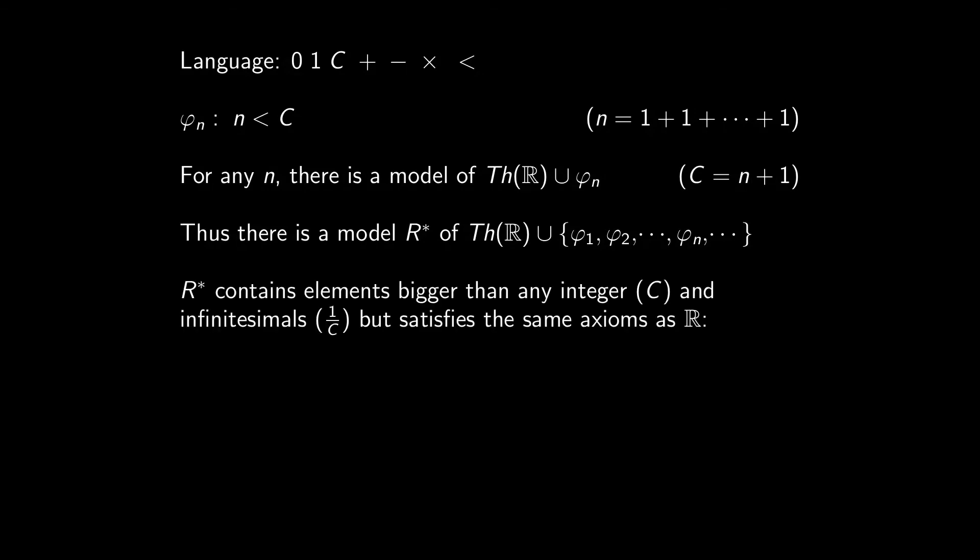Well then, in this model, c must be bigger than any integer, and 1 over c is infinitesimal, that is, it is bigger than 0, but smaller than any real number. Nonetheless, despite the existence of such weird elements, this model satisfies the same axioms as R, such as any positive element has a square root, or minus 1 has no square root, or any degree 3 polynomial has root. This is what we call a hyperreal field.